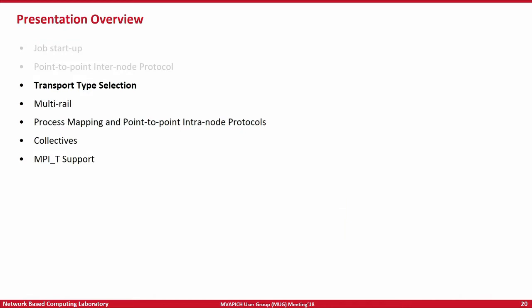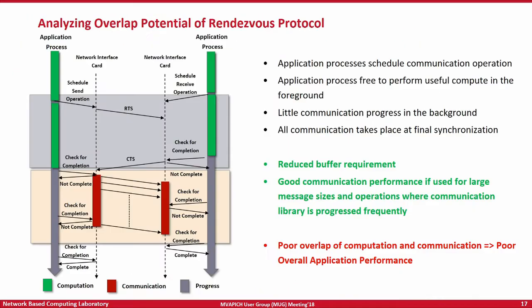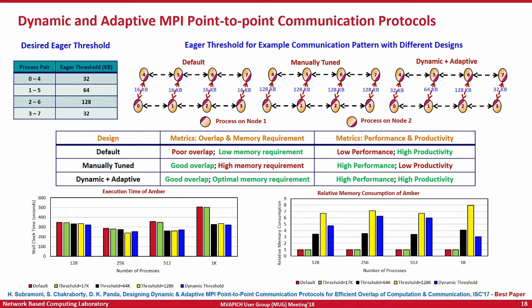That was what we had to say at a high level about point-to-point operations. Any questions so far? One key takeaway to remember is figuring out the overlap potential of eager and rendezvous protocols, and picking the right protocol for your application to enable overlap of communication and computation. This is very critical for a lot of applications, and something most application developers don't realize. They may be doing the right thing in theory, but practice is a far cry from theory. We have seen several applications that are written in technically correct ways but still don't get the benefit.